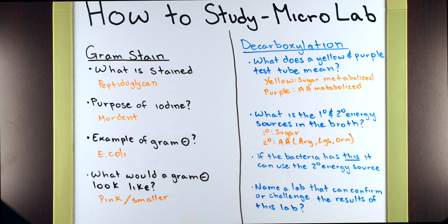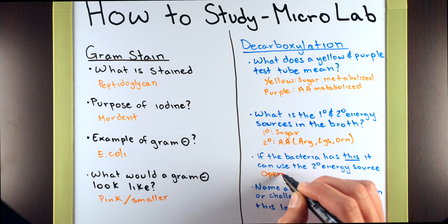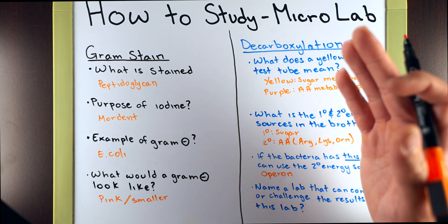The third question on the decarboxylation side is really testing if we know the material and the purpose of why we conducted this lab. It's asking us: if the bacteria has this, it can use the secondary energy source. We identified that the secondary energy source is the amino acid specific to the test tube. But what does the bacteria have to have in order to process that amino acid? It has to have the operon that is necessary to process that amino acid, because not every bacteria is going to have the operon able to process arginine, lysine, or ornithine. If you need a refresh on operons, check out the video link right over here.